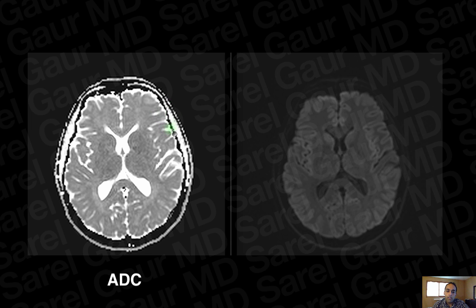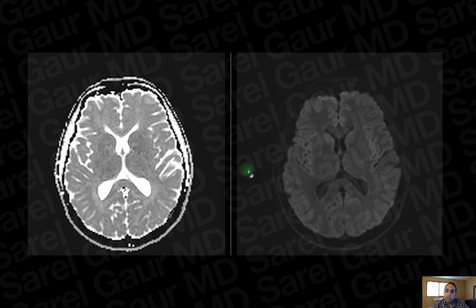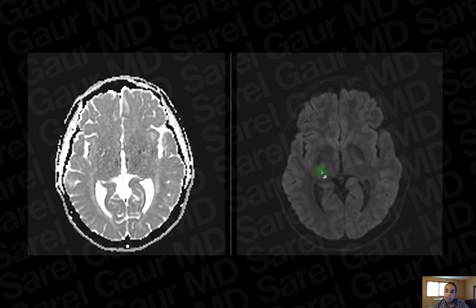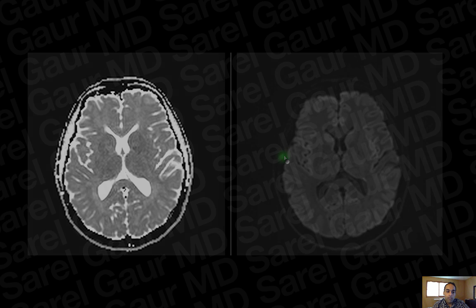To start, I have the ADC map on the left and the B1000 on the right. Basically, we're looking for something that's bright on the ADC and dark on the B1000 — corresponding to a focus of restricted diffusion — with infarct high on that differential.